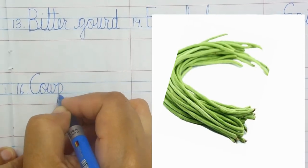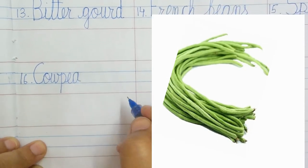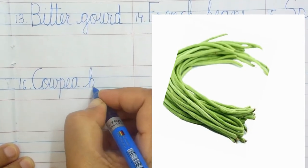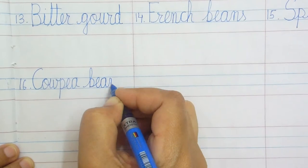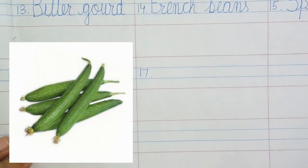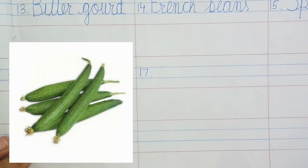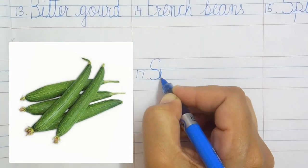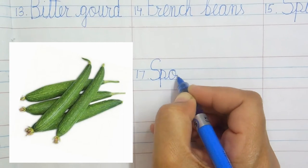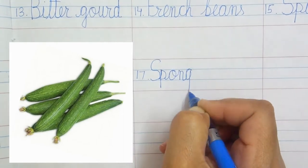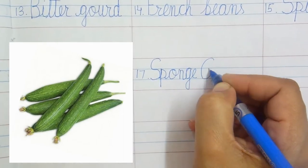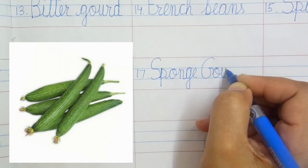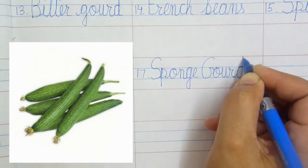Cowpea beans: C-O-W-P-E-A B-E-A-N-S, cowpea beans. Sponge gourd: S-P-O-N-G-E G-O-U-R-D, sponge gourd.